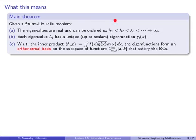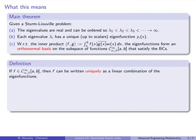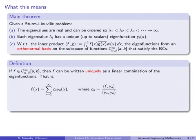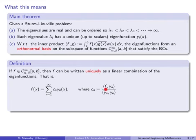So here's that main theorem again. I want to use this to motivate a definition. If f is a smooth function on [A, B] that satisfies the boundary conditions, then it can be written uniquely as a linear combination of the eigenfunctions — that is, f(x) equals the infinite sum from n equals 1 to infinity of c_n times Y_n(x). And just like for Fourier series, we have a simple formula for the coefficients c_n, which is just a projection based on the inner product structure.